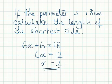What I'm actually being asked to find is the length of the shorter side. I know the shorter side has an expression of x plus 2 so I just substitute the value I had calculated for x into this.